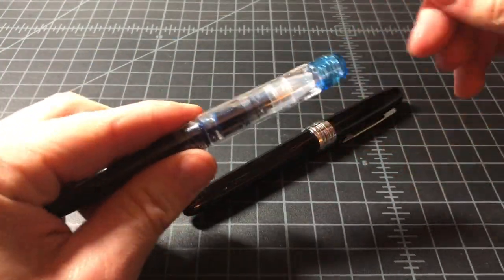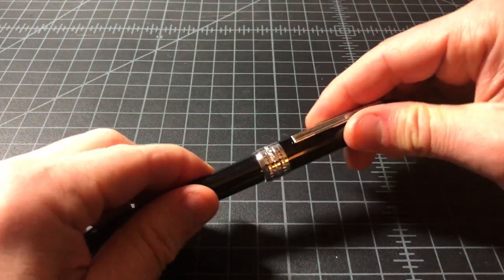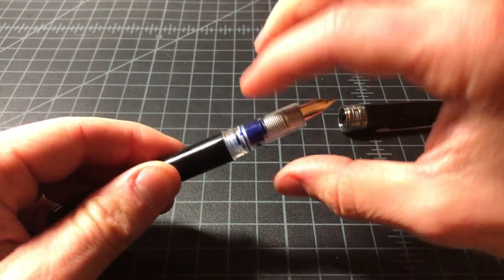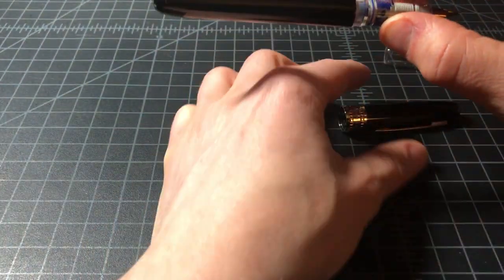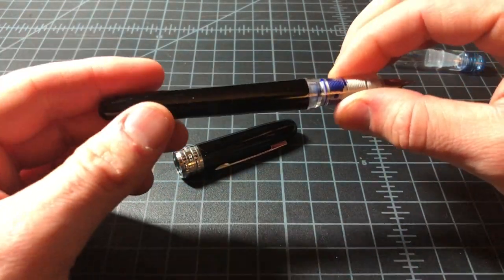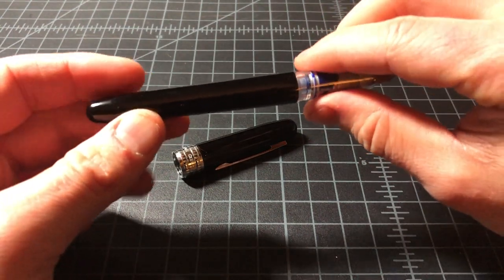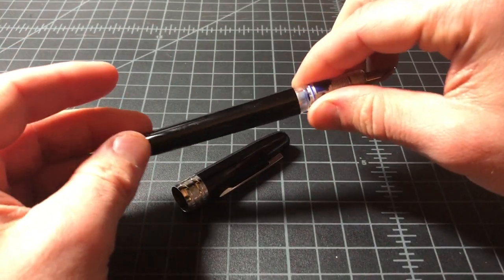The nib and all the business parts are the same. The Plaisir just moves to an aluminum body. It's a little bit hard to tell that it's aluminum, but when you pick it up, you can definitely feel that it's metal and it's very lightweight, so it's not shocking that it's aluminum.